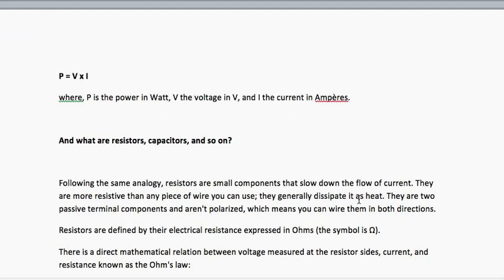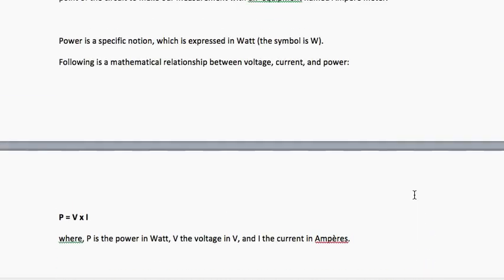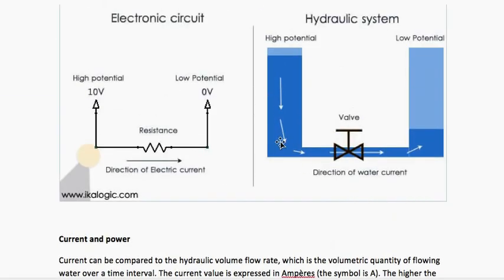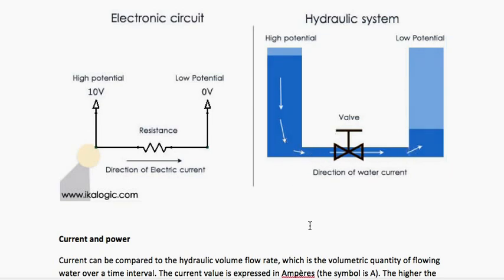Now come resistors and capacitors. Resistors are devices or small components that slow down the flow of current. Back to the hydraulic system — suppose in this tank you put some pebbles. When water starts flowing, the pebbles will obstruct and slow down the flow of water. Those pebbles represent resistance.